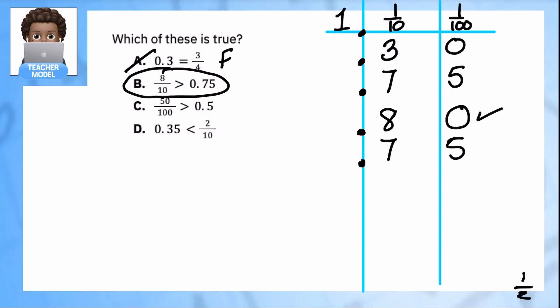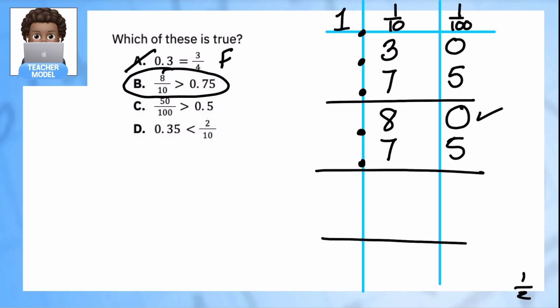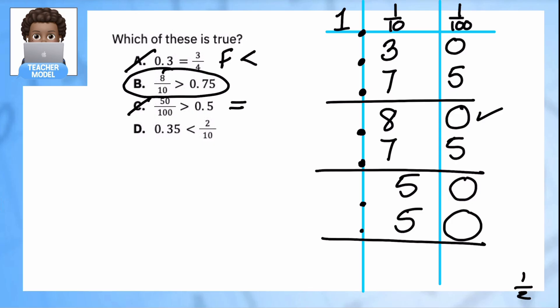Let's check the others just for comparison. Option C: 50 hundredths vs. 0.5 — I put 50 in the hundredths place and 5 in the tenths place with a placeholder. The statement says 50 hundredths is greater than 50 hundredths, but they're actually equal, so that's false. Option D: 0.35 vs. 2 tenths — 2 tenths is 20 hundredths, and the statement claims 20 hundredths is greater than 35 hundredths. That's not true; the symbol is facing the wrong way, so option D is also false.